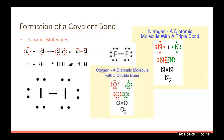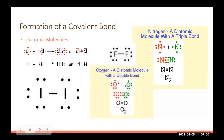Here's a different way of visualizing how diatomic molecules form different bond types: oxygen forms a double bond, nitrogen forms a triple bond, and hydrogen, chlorine, fluorine, and iodine all form single bonds. It's just a different visualization that may help reinforce the concept.